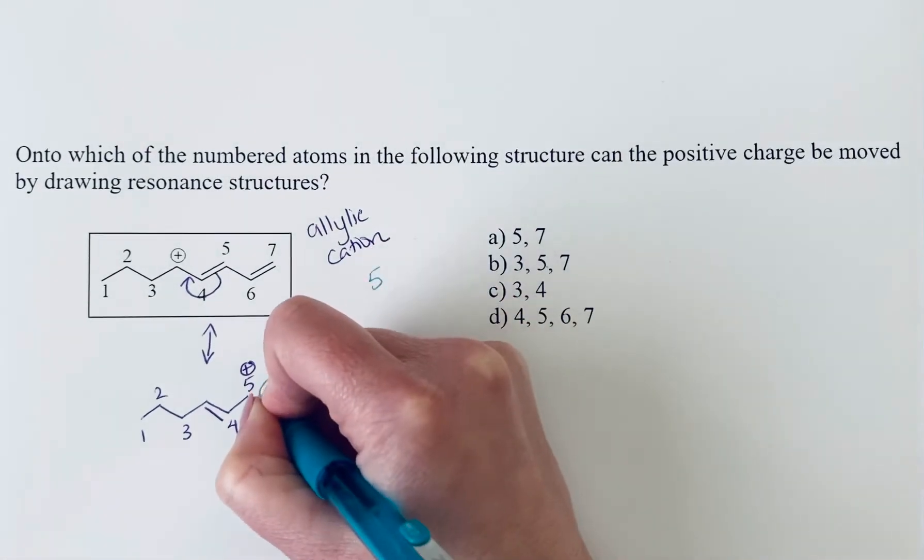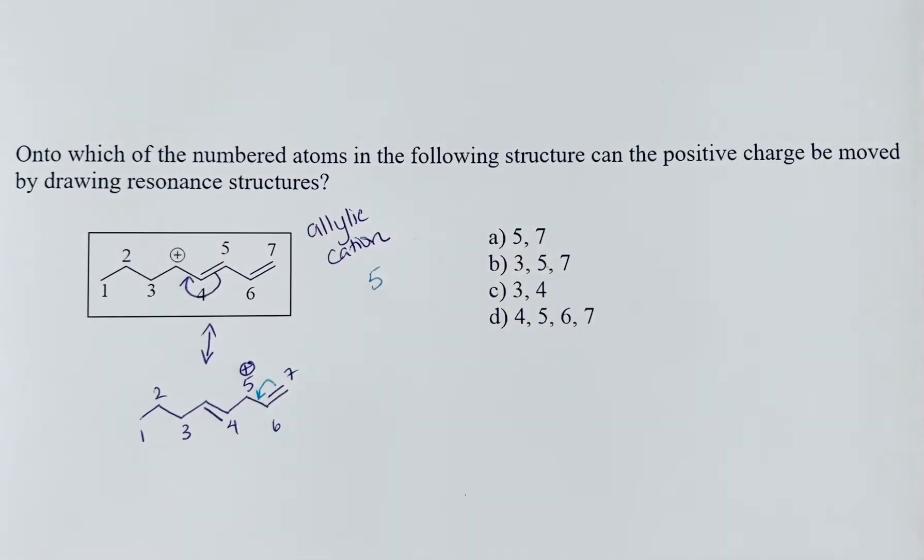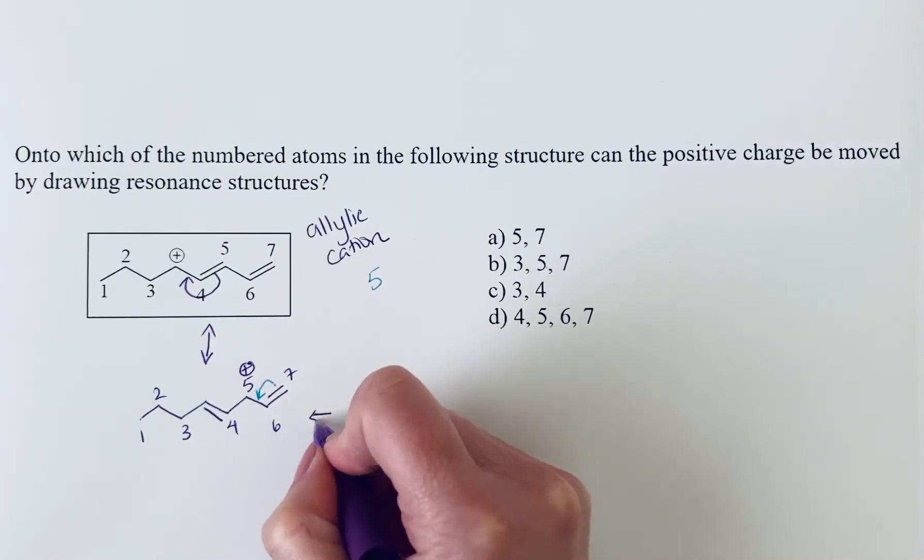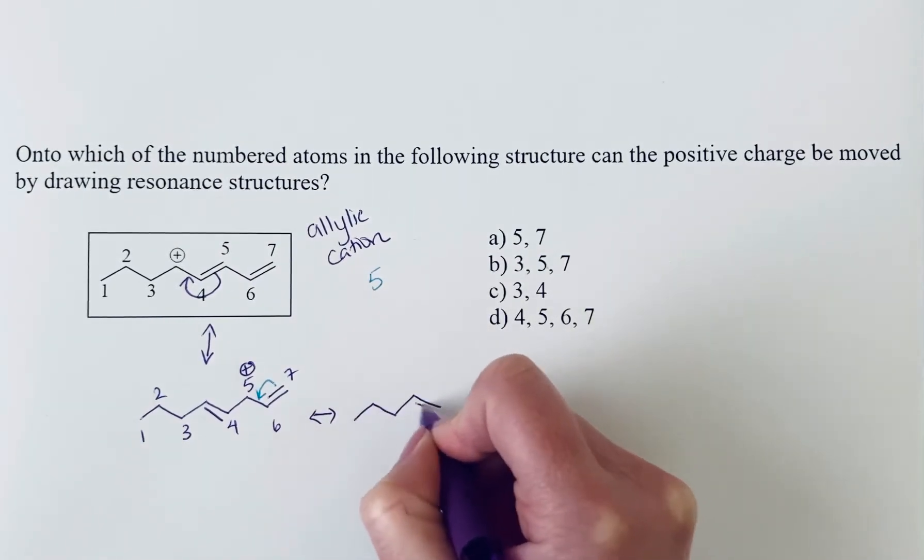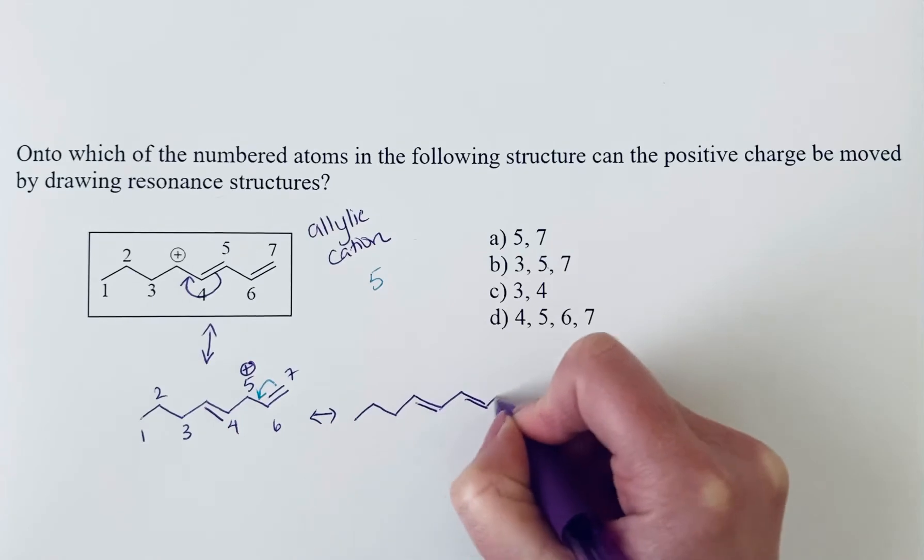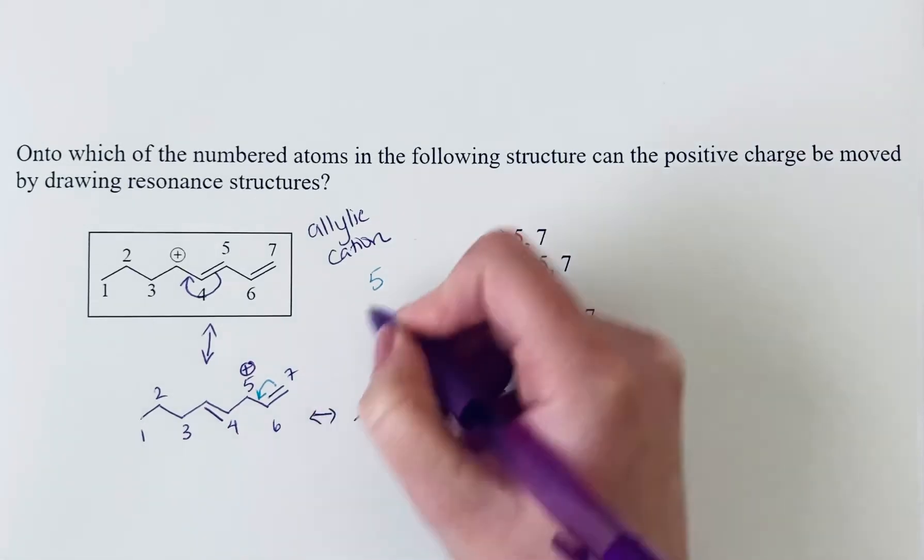And then we can do one more shift of the pi bond between six and seven in. And so this shift here will put the positive charge out on the end, which is seven.